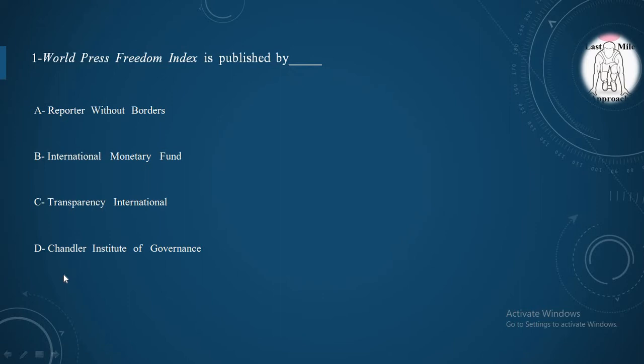First question of the day is asking, World Press Freedom Index is published by Option A, Reporters Without Borders. Option B, International Monetary Fund. Option C, Transparency International. Option D, Chandler Institute of Governance. And the correct option is Option A, Reporters Without Borders, which publishes the World Press Freedom Index annually.